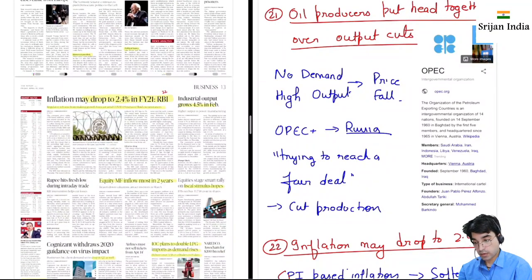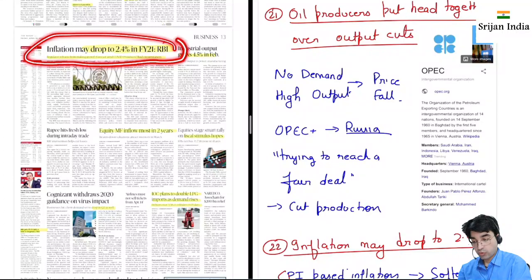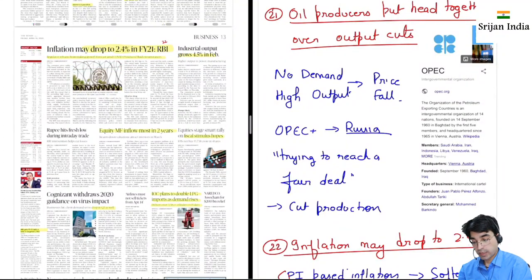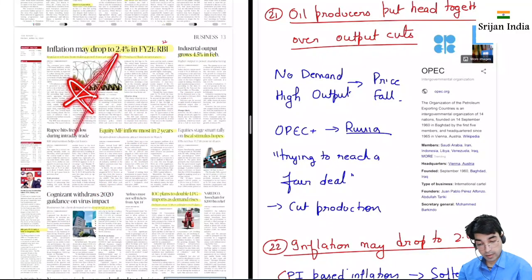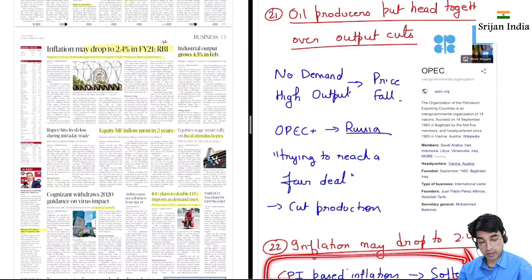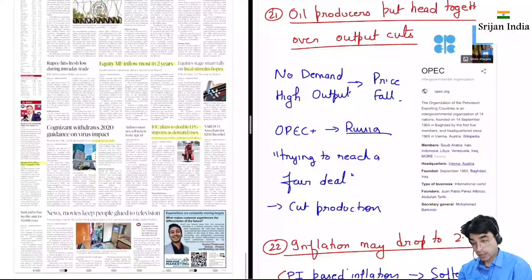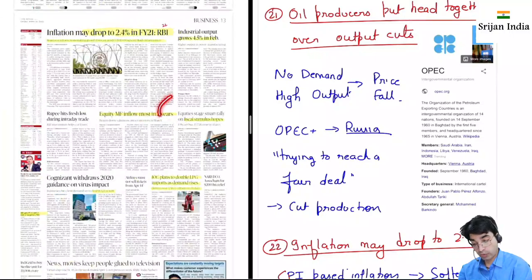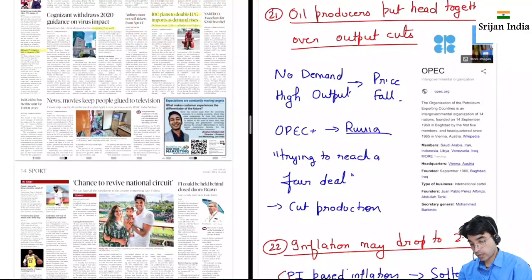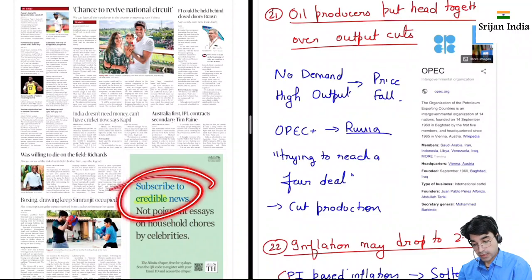Inflation may drop to 2.4% in financial year 21. Inflation ka matlab: aaj 100 rupay hai, kal 110 rupay ho gayi toh 10% inflation hua. Inflation rate bahut zyada bhi nahi honi chahiye — isse jo hamare currency ki value hai woh kharab ho jaati hai. CPI-based inflation thoda soften ho gaya hai — head inflation WPI aur CPI pe calculate karte hain. Equity mutual fund inflows sabse zyada two years mein — fiscal stimulus ki zarurat hai industry ko. LPG import double ho gaya hai because demand rise hua hai.